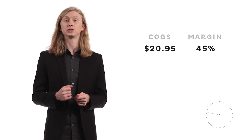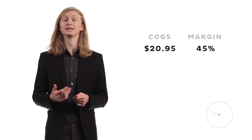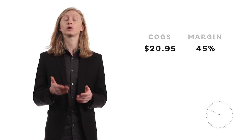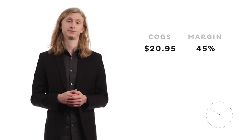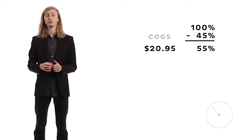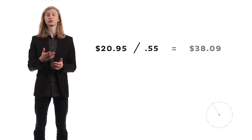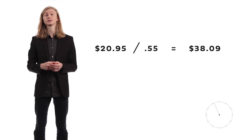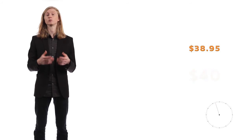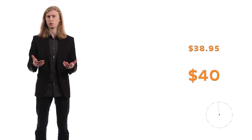This is the money you use to pay for operations and services, as well as any other labor or employee salaries. Using your calculations from before, apply this formula. Look at your result and then round up to the nearest ninety-five cents or rounded number for simplicity. What are you left with?